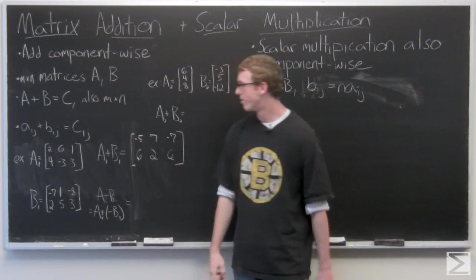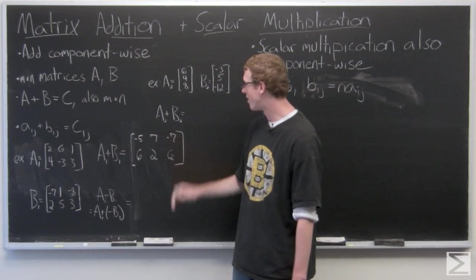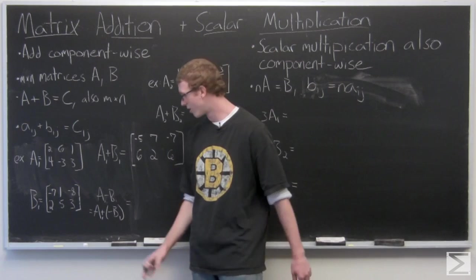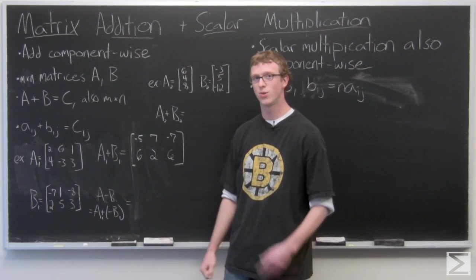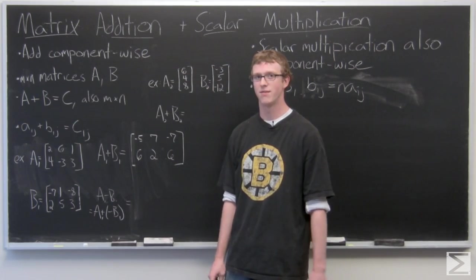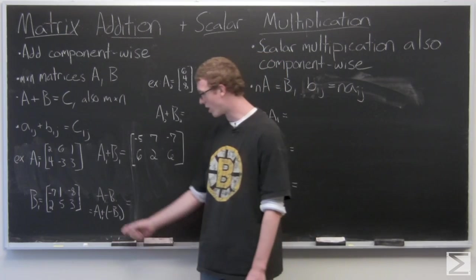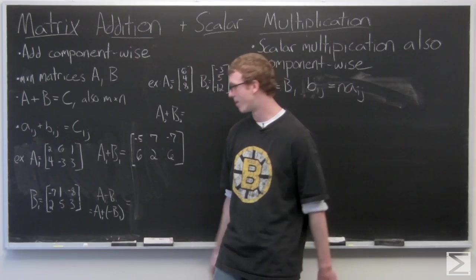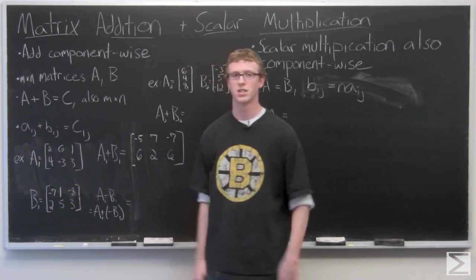So the resultant matrix comes out to negative 5, 7, negative 7, 6, 2, 6. Now we're going to take a look at A1 minus B1, very similar to vectors, how we chose to do A plus negative B. It just makes a little more sense to multiply the negative 1 through the matrix and then add them.